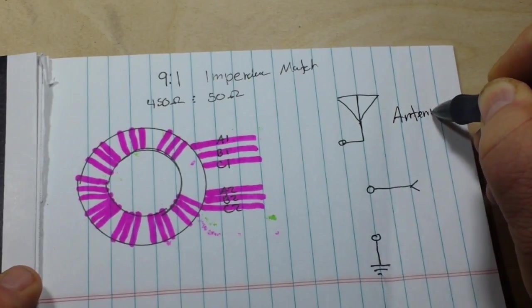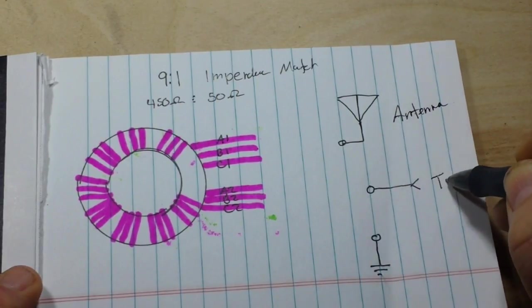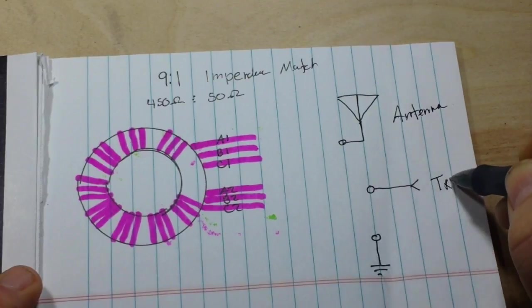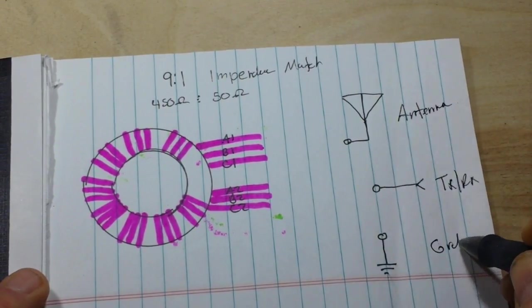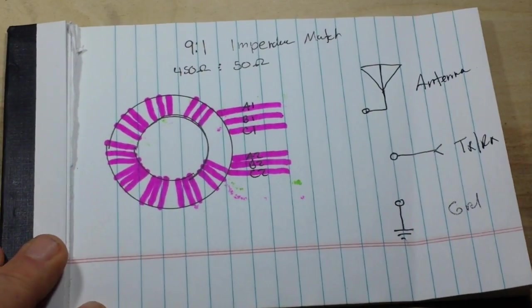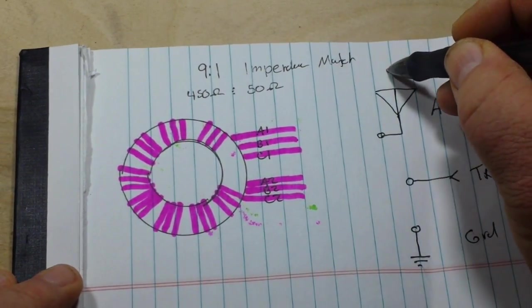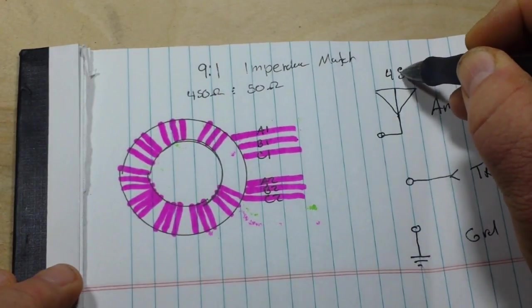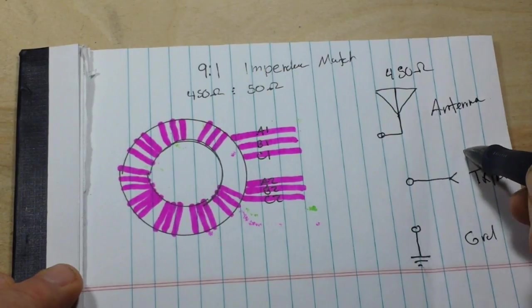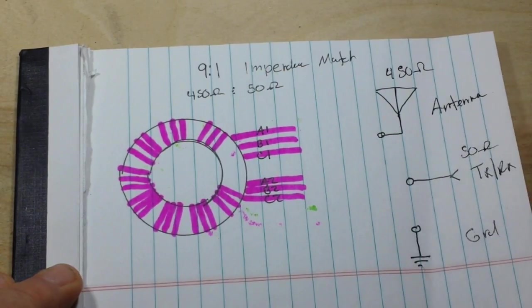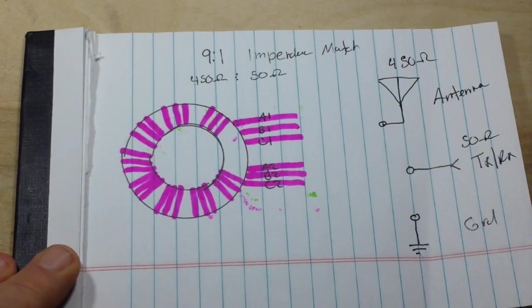Over here we have our antenna, our radio, and our ground. The antenna in this case would be a high impedance 450 ohm long wire antenna, and our radio would be the low impedance 50 ohm load.